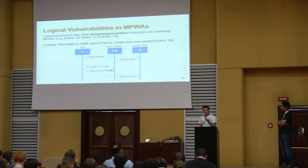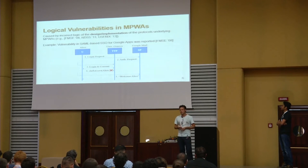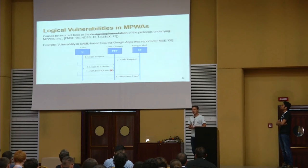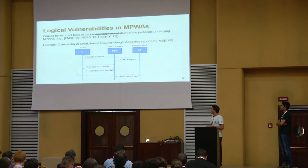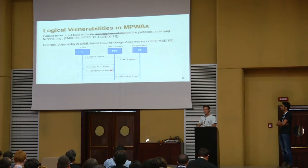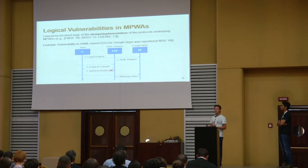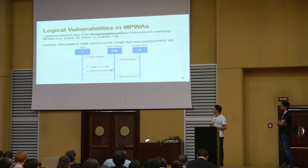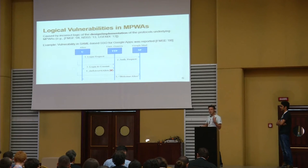However, on this scenario many vulnerabilities have been reported over the years, and many of these are what we call logical vulnerabilities. A logical vulnerability is basically an incorrect logic in the design or implementation of the protocol. This could be that you do not bind properly two parameters of the protocol and therefore the attacker can do something nasty. Here you can see an example: this attack was discovered in 2008 and was for the SAML-based single sign-on of Google Applications.